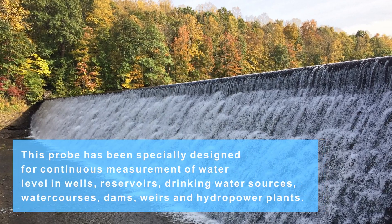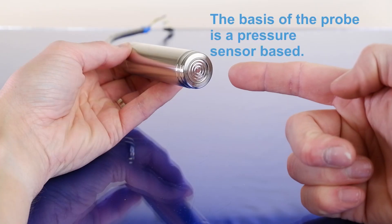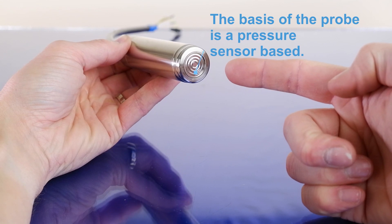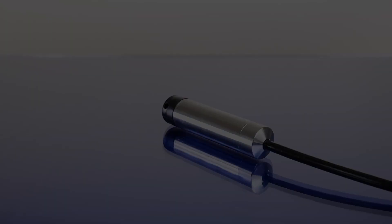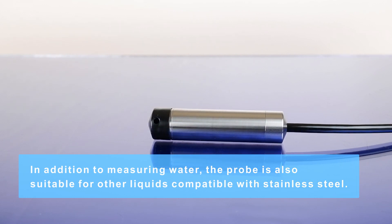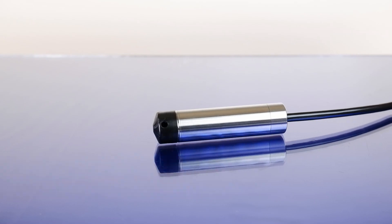The basis of the probe is a pressure sensor based on a semiconductor strain gauge with a stainless steel diaphragm. In addition to measuring water, the probe is also suitable for other liquids compatible with stainless steel.